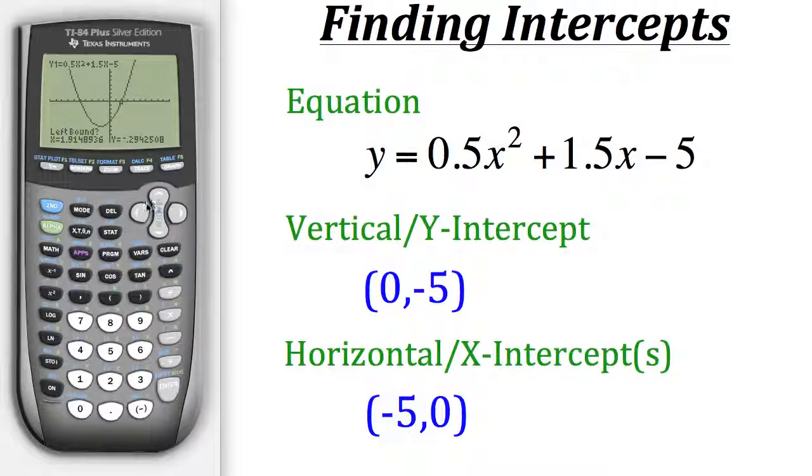Now again we need to set the left and right bounds for it. So first we need to do the left bound. So we'll go a little to the left of it and then hit enter. Now we need to find the right bound or set a right bound. So we'll go a little to the right of the intercept and then hit enter.